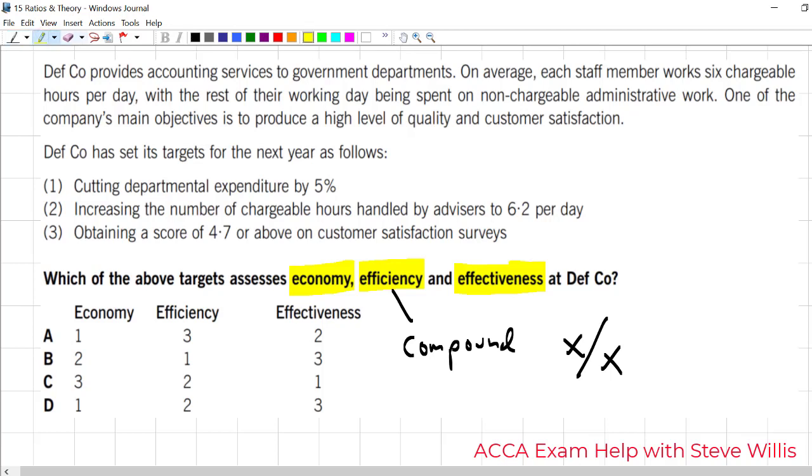We're looking at an accounting service for government organizations. Each staff member works six chargeable hours a day. The rest of the time, non-chargeable admin work. The objective is high quality and customer satisfaction. That's going to help us answer the effectiveness part. Which one is about quality and customer satisfaction? Three. So, it's got to be this or this.